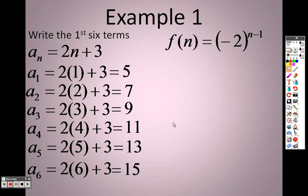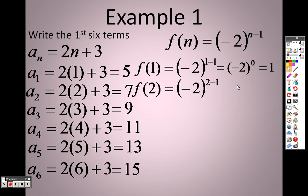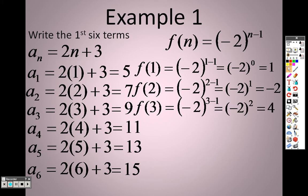Another example shows you can plug in the terms even in exponents. If I plug a 1 in for n, because it's the first term, 1 minus 1 is 0, and anything to the 0 power is 1. If I plug in a 2, 2 minus 1 is 1, so negative 2 to the 1 is negative 2. If I plug in a 3, 3 minus 1 is 2, so this is negative 2 squared, which is 4.